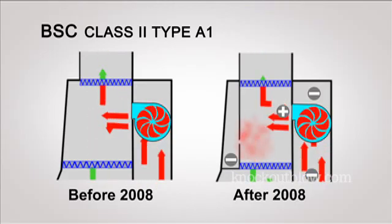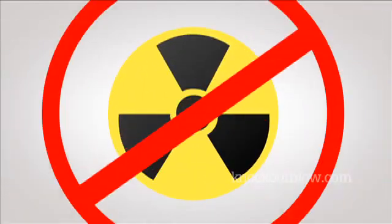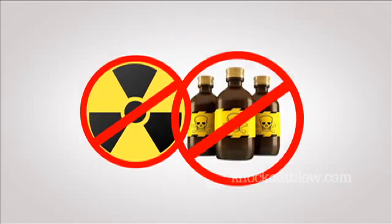Class 2 type A1 cabinets are not suitable for work with volatile toxic chemicals and radionucleotides.